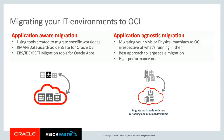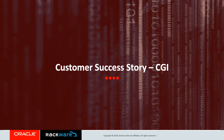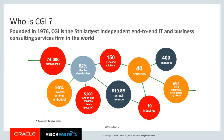Now let's hear from Rajiv on how CGI migrated their applications to OCI using Rackware. CGI has been with Oracle for the last three and a half years, using Oracle Cloud Infrastructure. CGI was founded in 1976, has been in business for 40 years, and is the fifth largest independent IT consulting company in the world. We have a track record of delivering 95% of projects on time and under budget, with delivery centers in North America, Europe, India, and the Philippines.